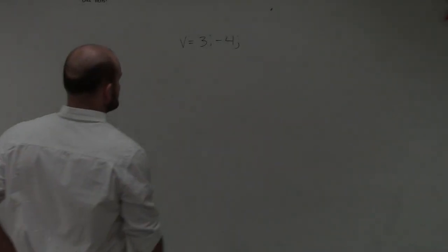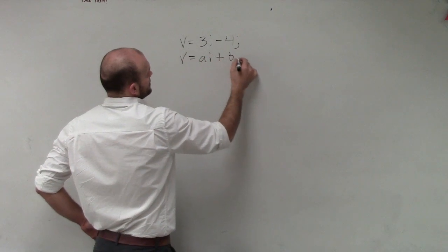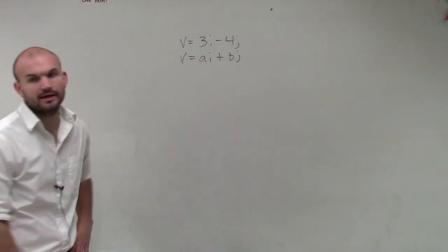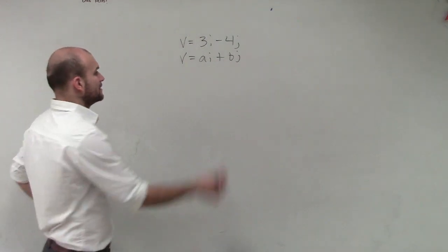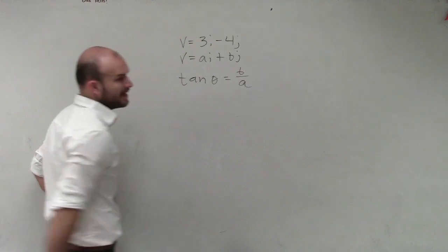b equals 3i minus 4j. Remember that we can write this as ai plus bj. So if I want to find the direction of this angle, I can say tangent of theta is equal to my b over my a.